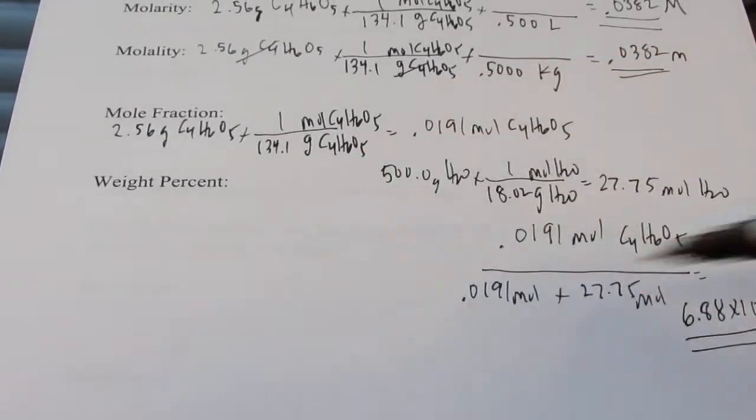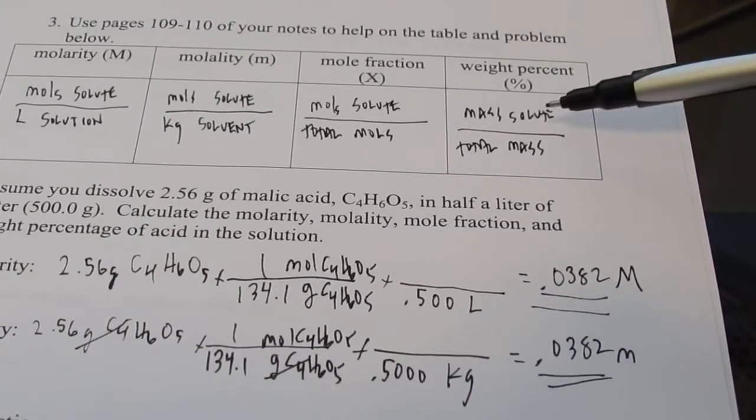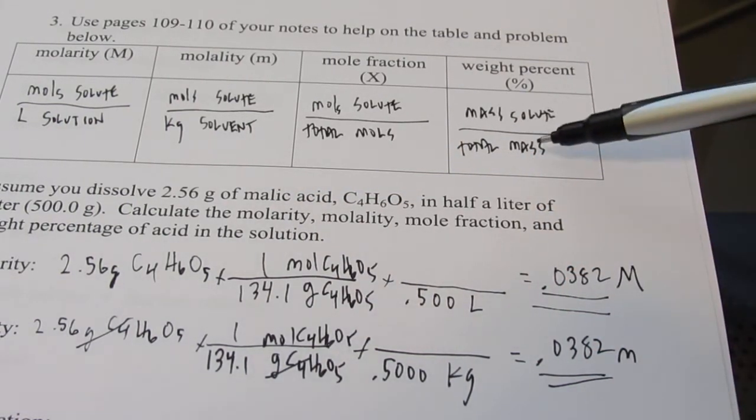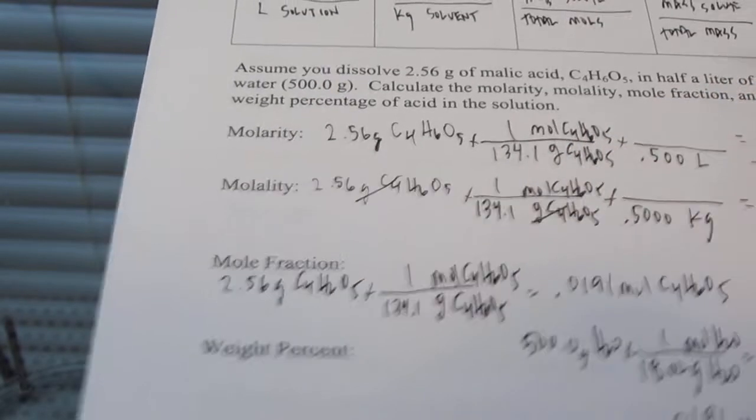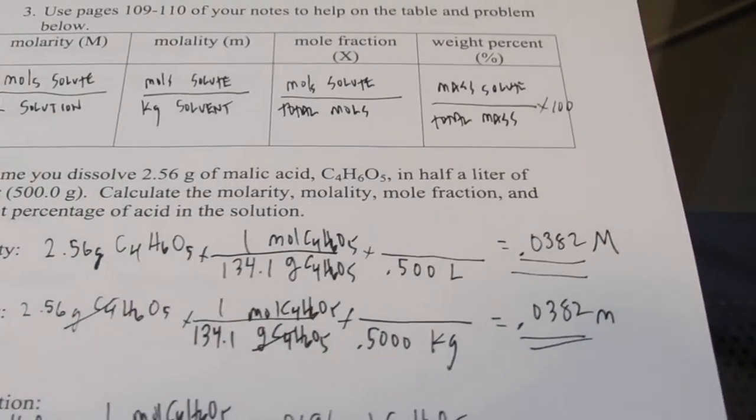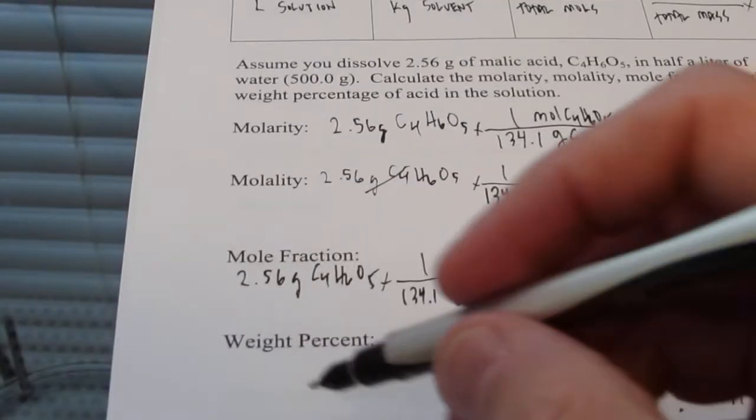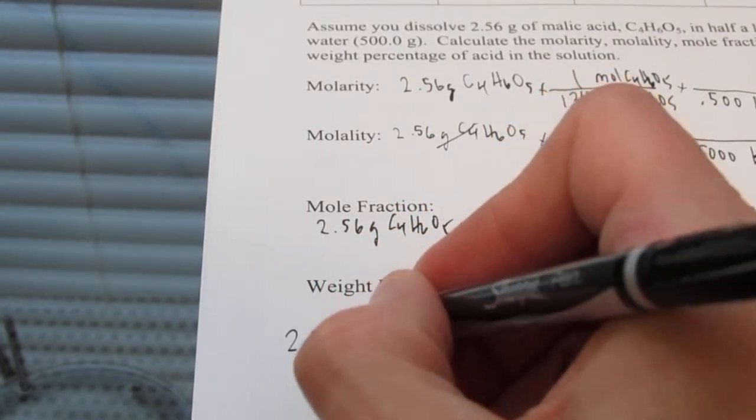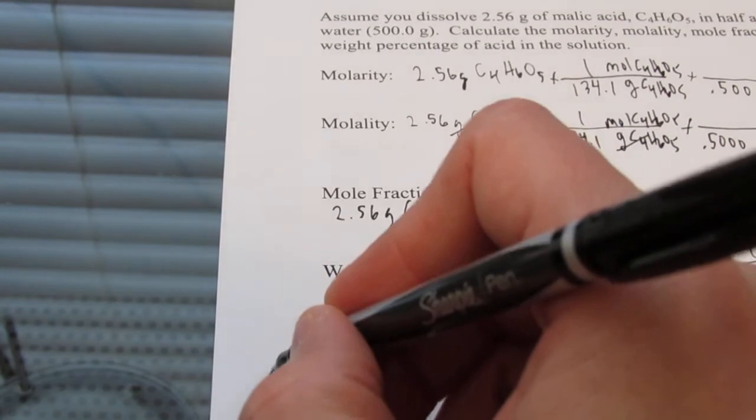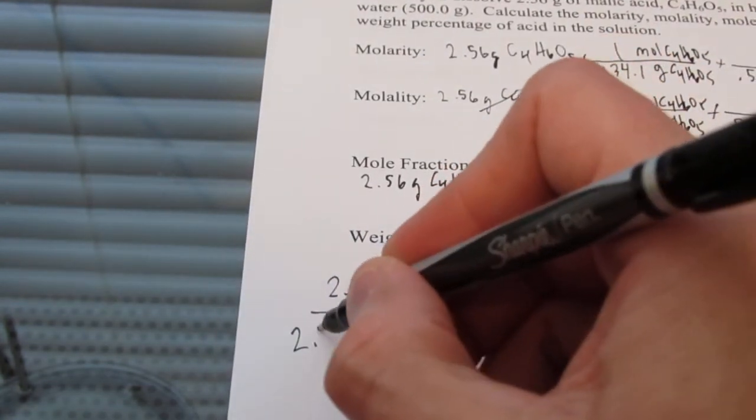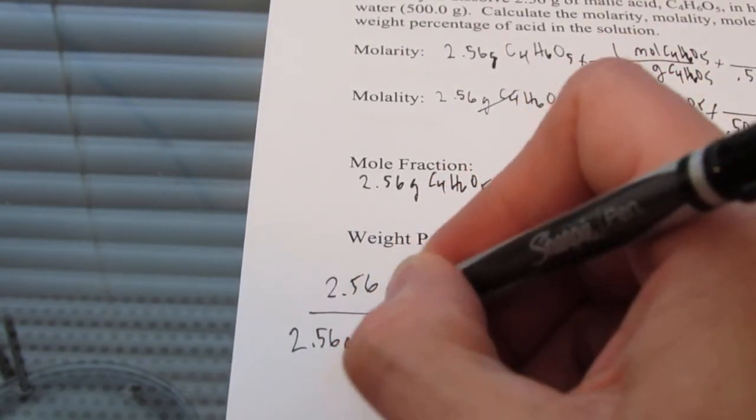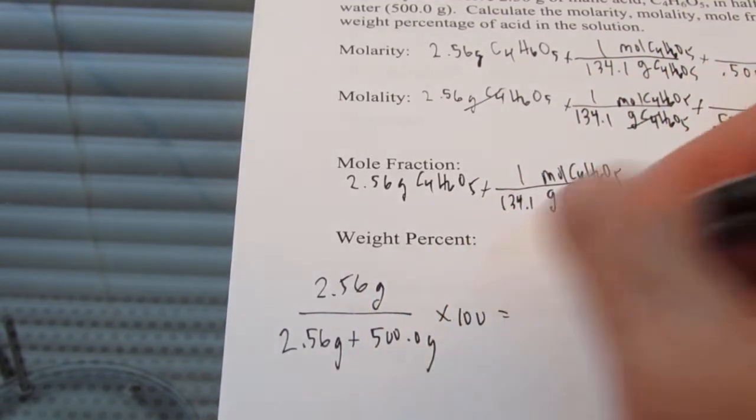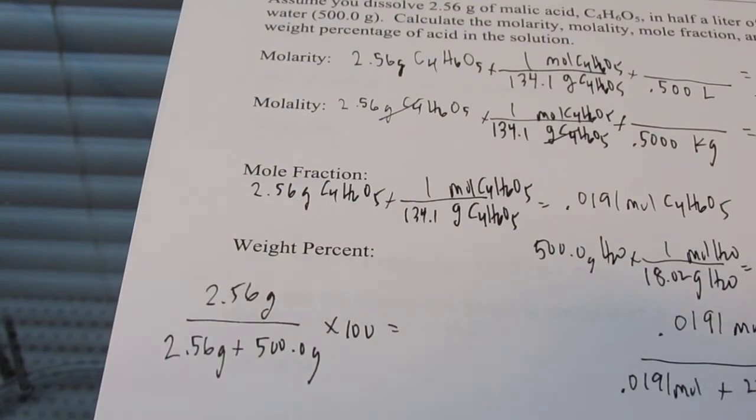And the last thing we can calculate here is the weight percent. And that is the mass of my solute, which is my malic acid, divided by the total mass. And then we'll multiply that by 100 to change it to a percentage, of course. So let's do that right down here. We had 2.56 grams divided by the total mass of my solution. So 2.56 grams plus 500.0 grams of water. And we'll multiply that by 100 to give us a percentage.